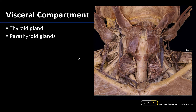The parathyroid glands can be found in a variety of locations, but the most typical location is on the posterior aspect of the thyroid gland. In this image, all the strap muscles as well as the sternocleidomastoid have been reflected superiorly, which allows us to better see the thyroid gland. On the right side the thyroid gland has not been reflected — you can see the trachea right here — but on this side the thyroid gland has been reflected and we're looking at a posterior view of it. I hope you notice these fairly distinct structures; these are examples of parathyroid glands.